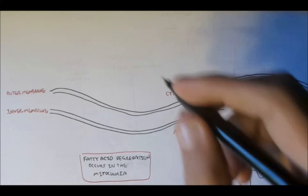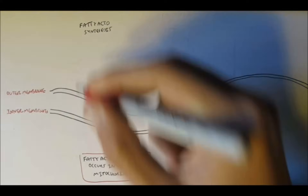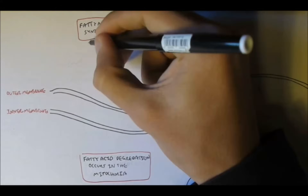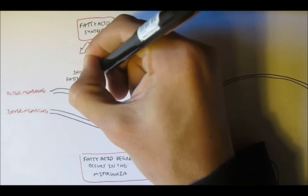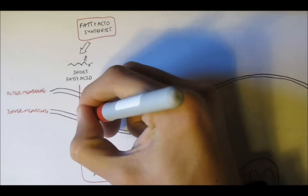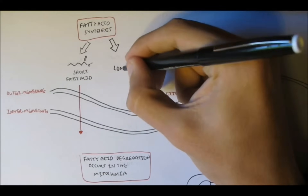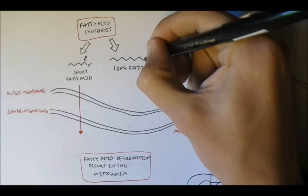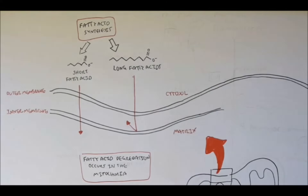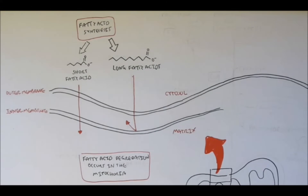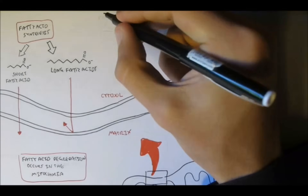Fatty acid synthesis can produce short fatty acids or long fatty acids. Short fatty acids can pass through both mitochondrial membranes — the outer membrane and the inner membrane — quite easily. However, long fatty acids can only pass through the outer membrane, not the inner. So how does a long fatty acid pass through the inner membrane? What kind of mechanism allows it to go inside the mitochondria?